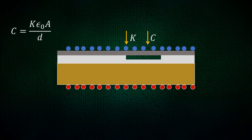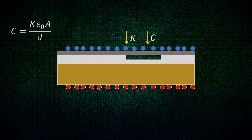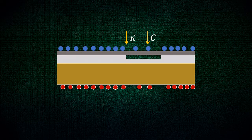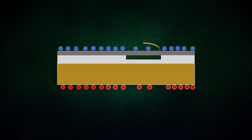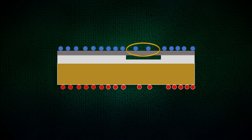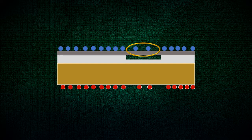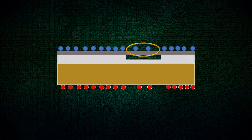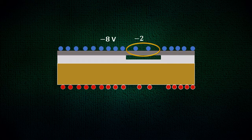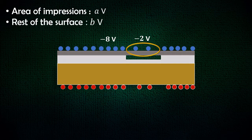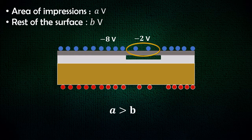And since capacitance is the ability to store charge, these regions will have lesser charge than the other regions. And if you understand the fundamentals of electrostatics, you can easily figure out that because of the presence of lesser negative charge in the areas of impressions, they will have less negative potential as compared to the remaining areas of the paper. So if we denote the potentials as A and B, then we can say that A will be greater than B, because more negative means smaller.